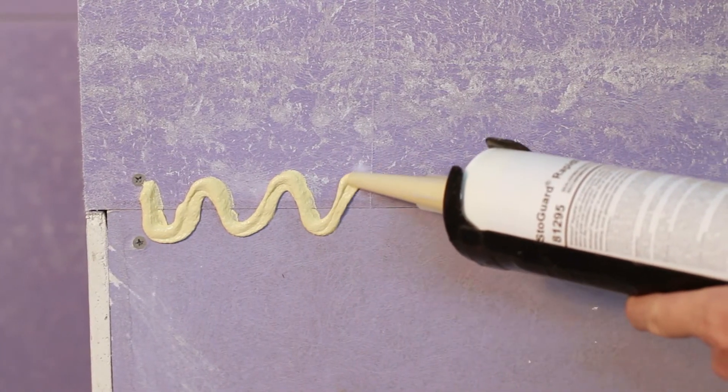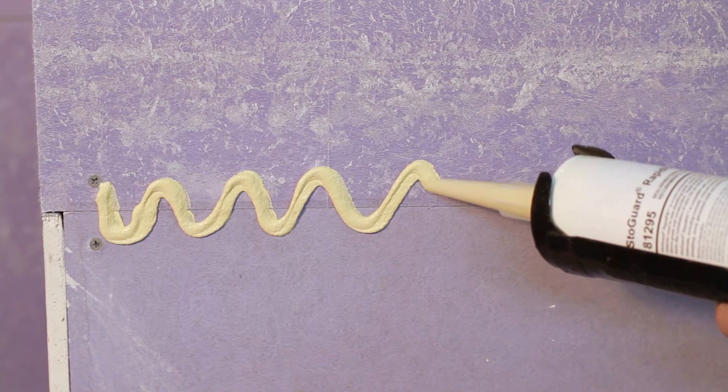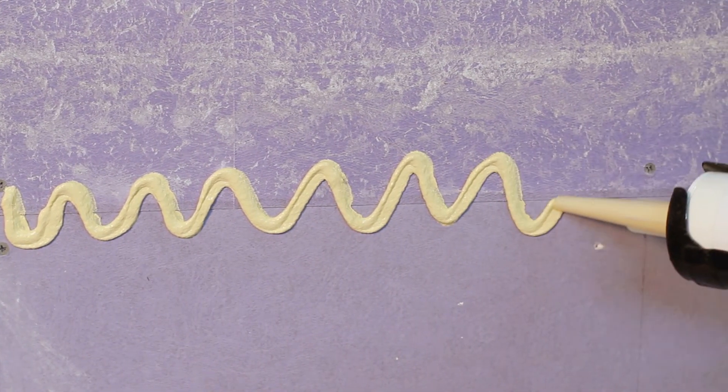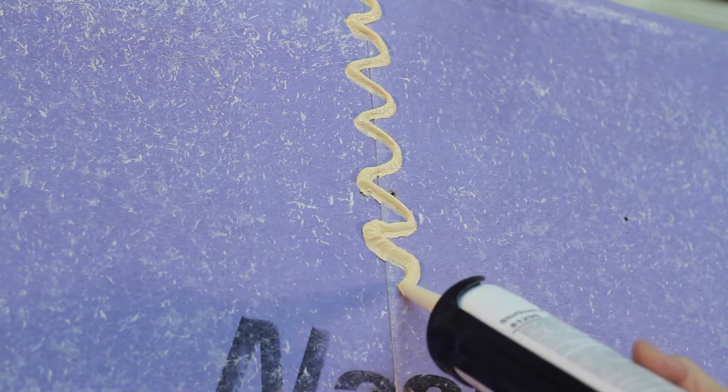Using a caulking gun, apply a thick bead of Stogard Rapid Fill along sheathing joints. For ease and application, you may also apply Stogard Rapid Fill in a zigzag pattern across and down the joints.